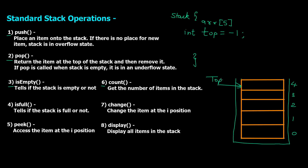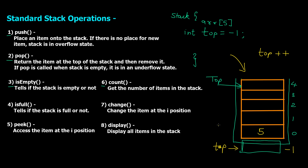The 'top' variable keeps track of how many elements are inserted in the stack. Initially top is minus one, meaning no values are in the stack. When we push a value — say we push the integer five — it's added at the bottom of the stack, and we do top++, incrementing from minus one. Now top has value zero, pointing to the zero index location where the value is stored.